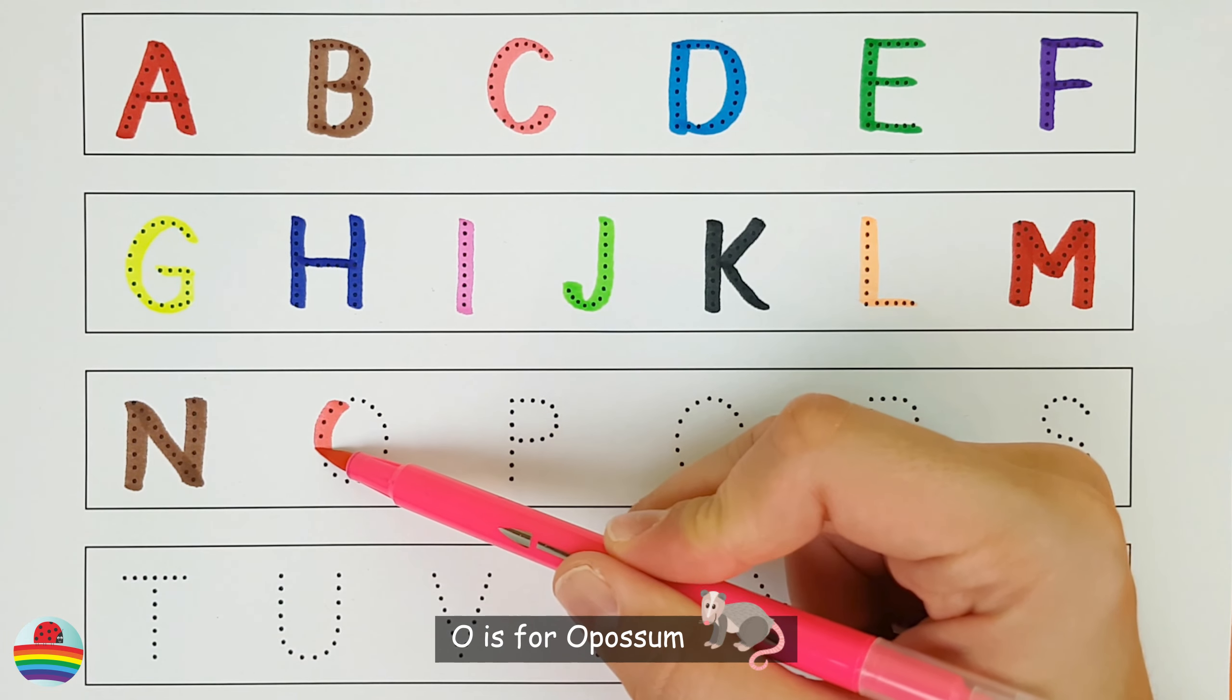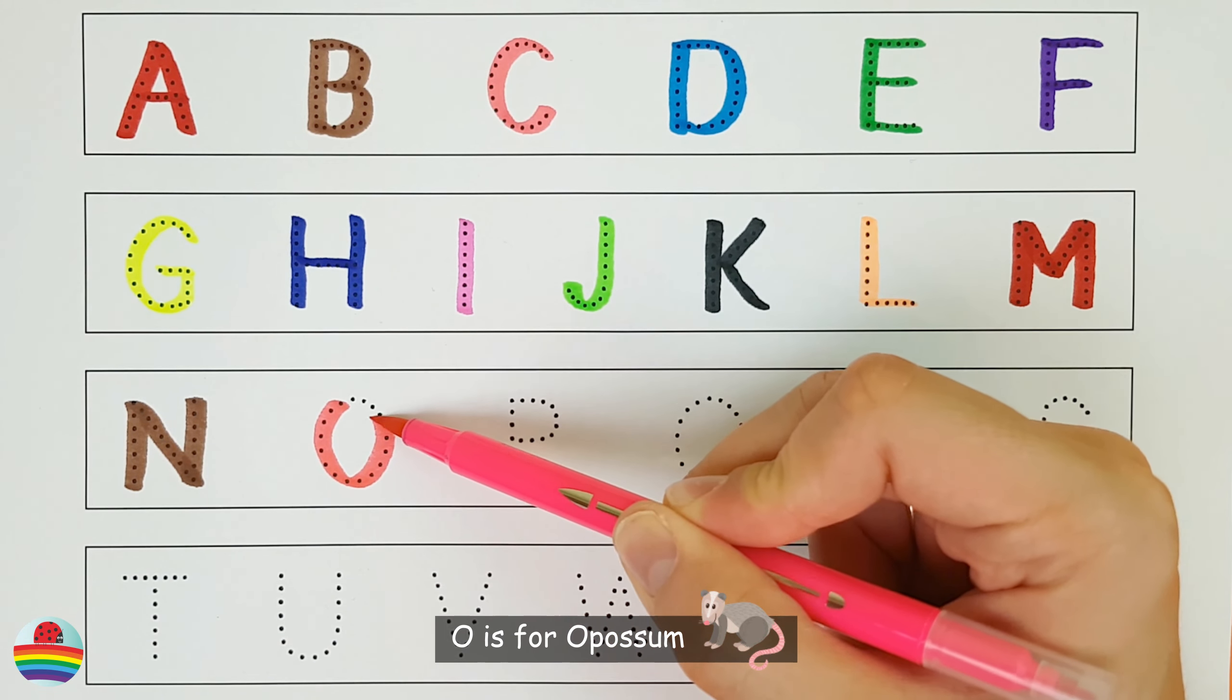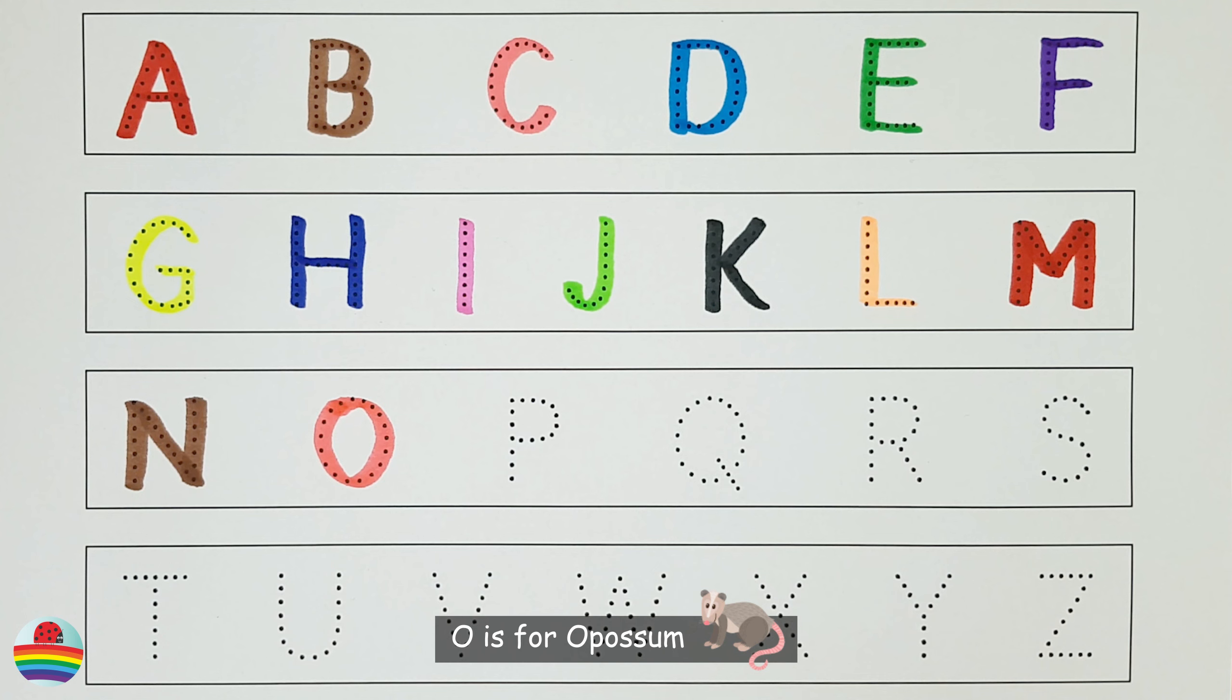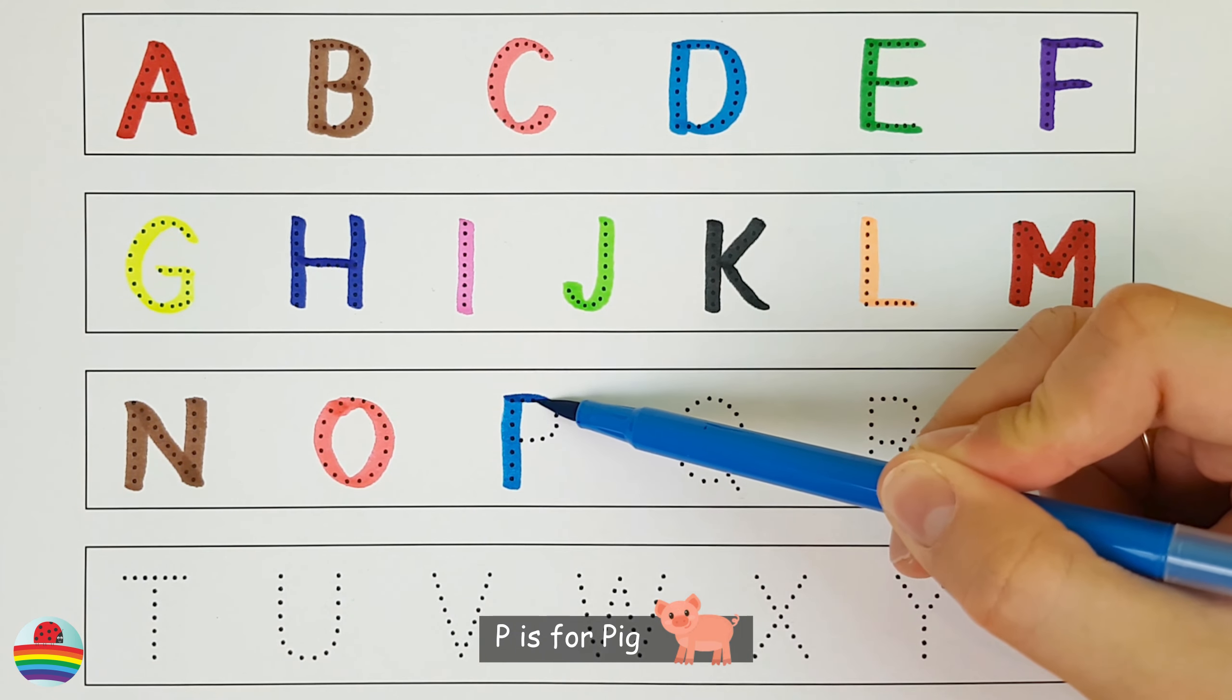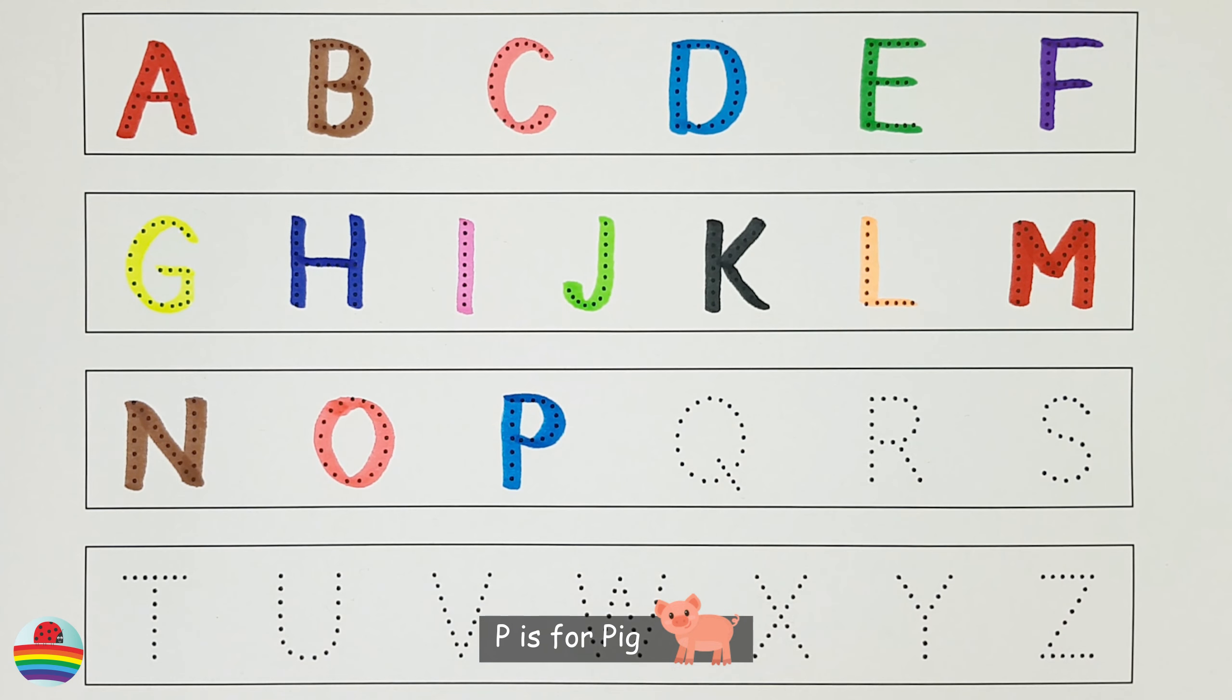O. O is for Opossum. O. P. P is for Pig. P.